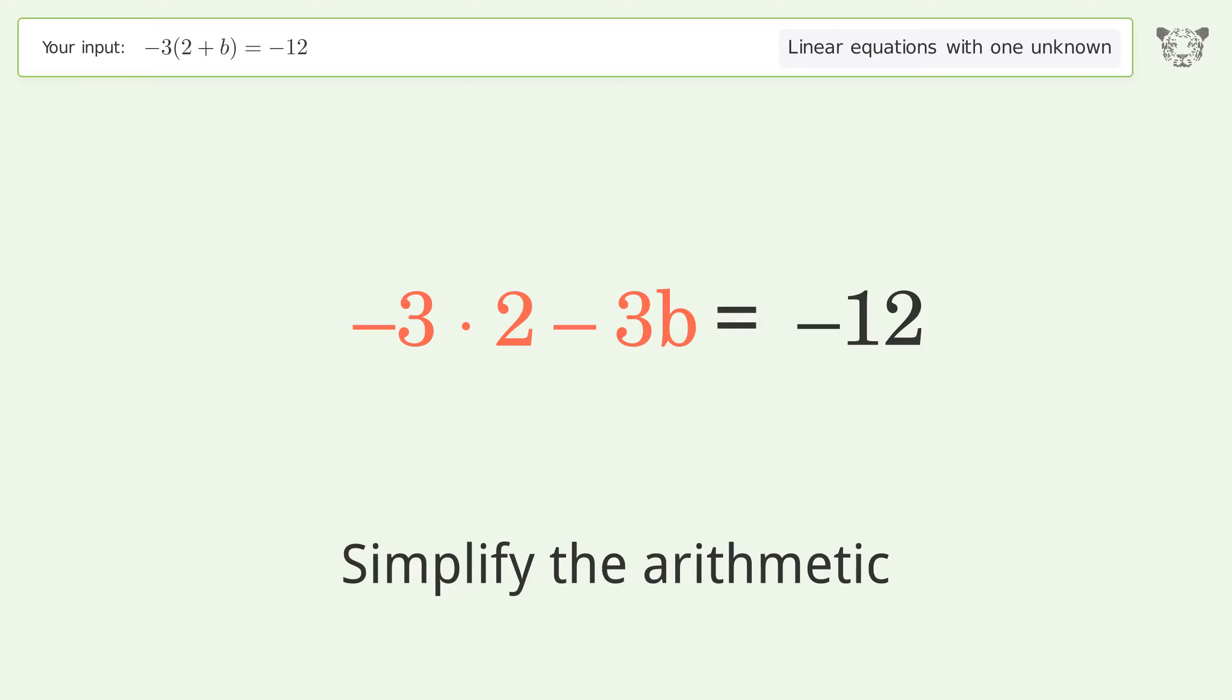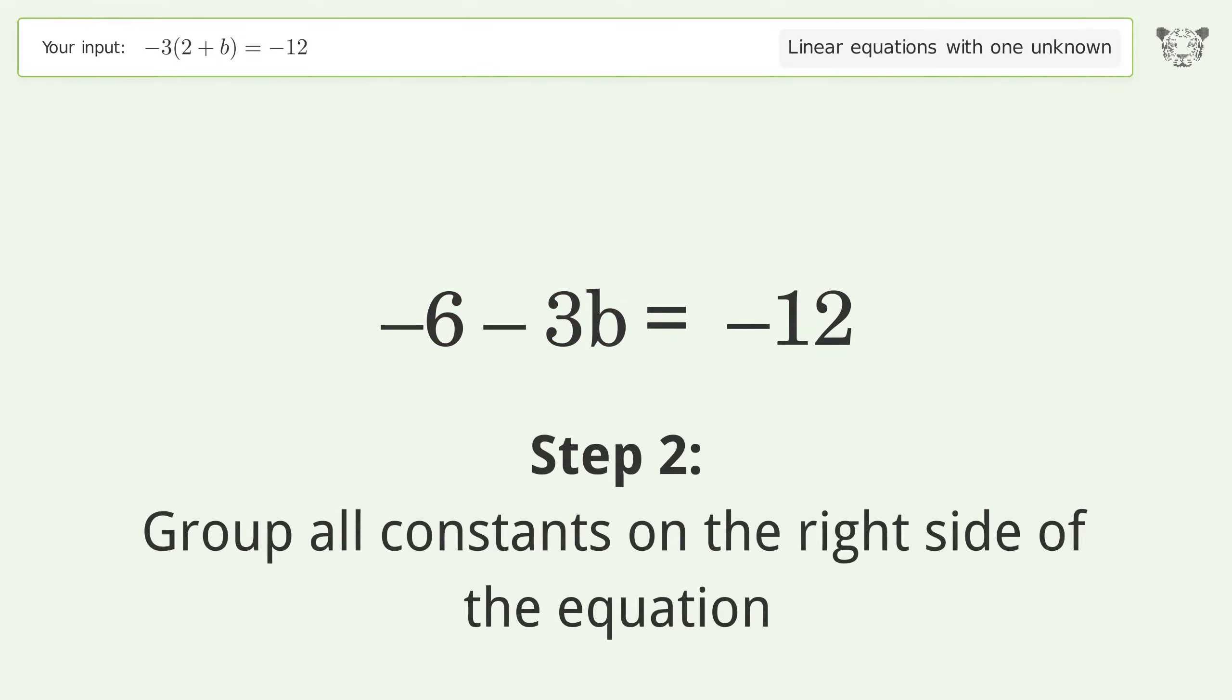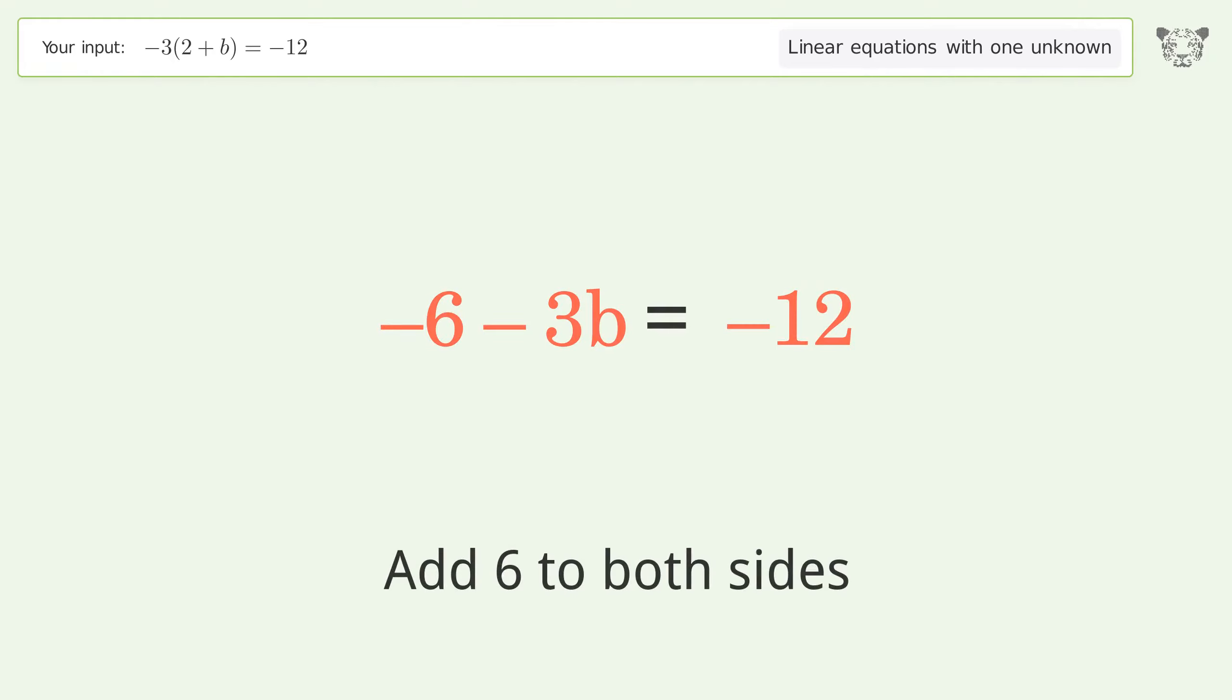Simplify the arithmetic. Group all constants on the right side of the equation. Add 6 to both sides.